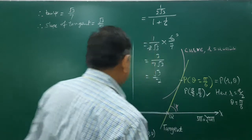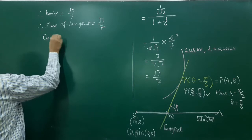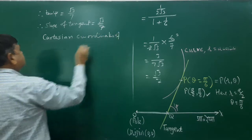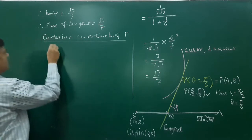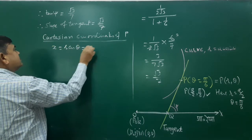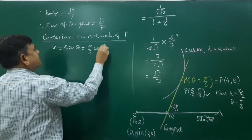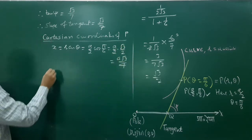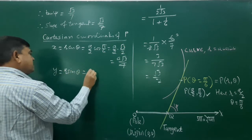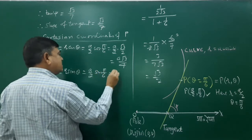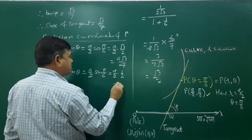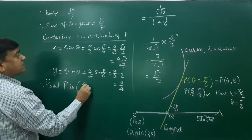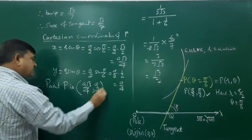Now we convert point P to Cartesian coordinates. x = r·cos θ = (a/2)·cos(π/6) = (a/2)·(√3/2) = a√3/4. y = r·sin θ = (a/2)·sin(π/6) = (a/2)·(1/2) = a/4. Therefore point P in Cartesian coordinates is (a√3/4, a/4).